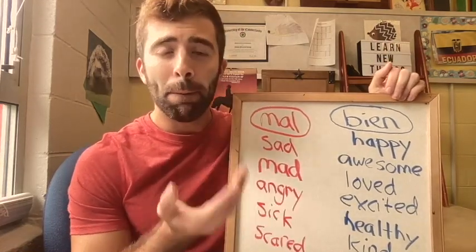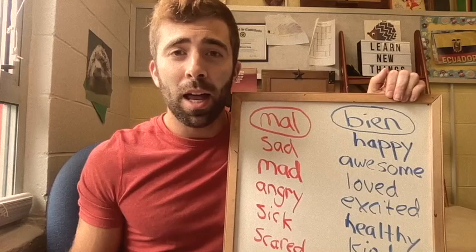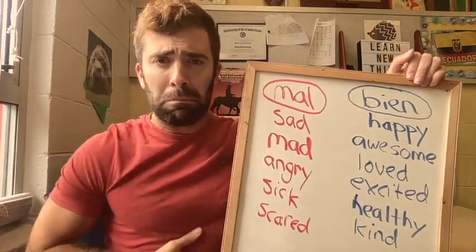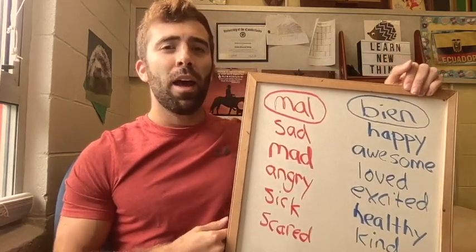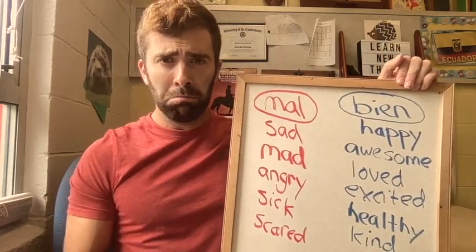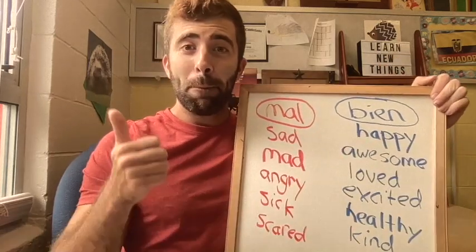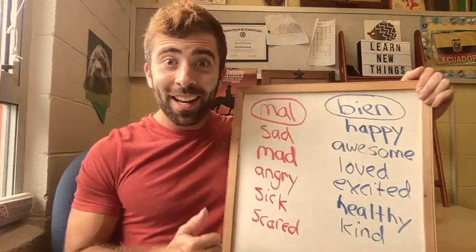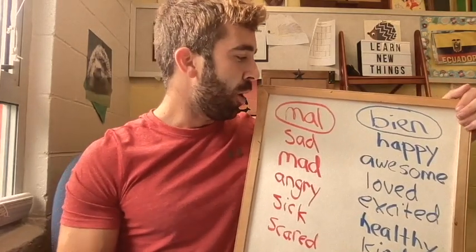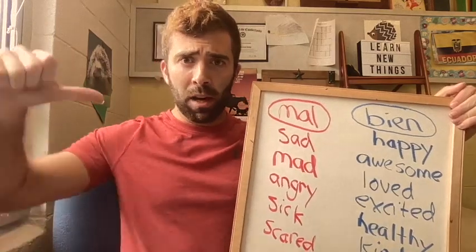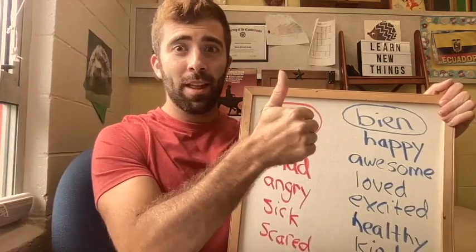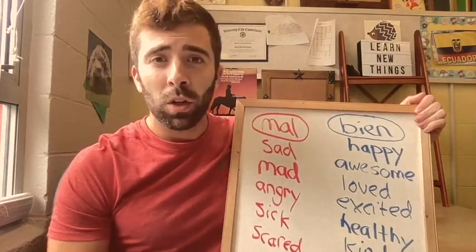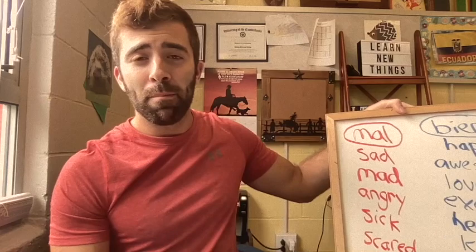Have everyone say 'mal' and show you mal — make a sad face, an angry face, a sick face, a scared face. Then everyone say 'bien' and show a happy or excited face. You can repeat it: mal with thumbs down, bien with thumbs up. Then we're going to look at some bien and mal faces projected in the classroom from a Google Slides presentation with pictures of different characters.